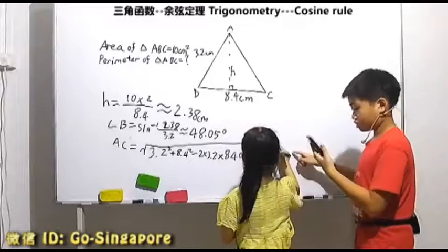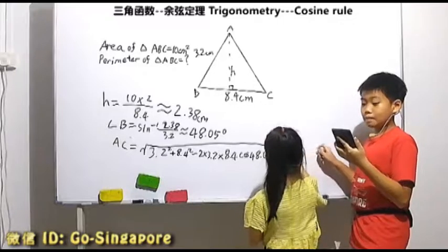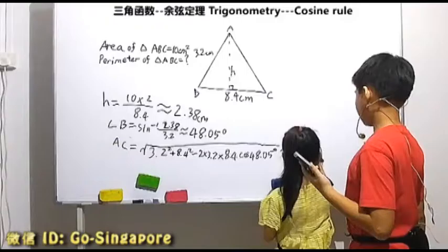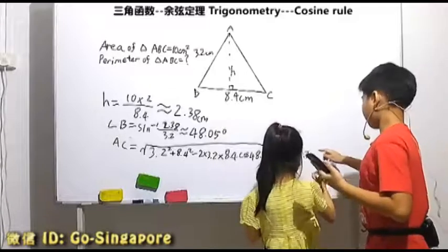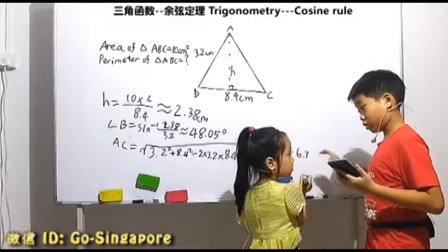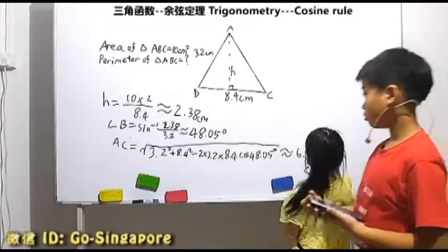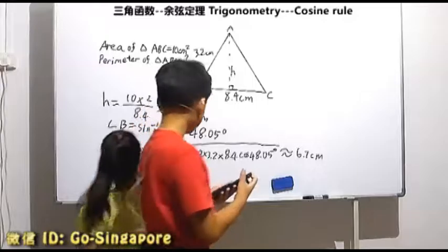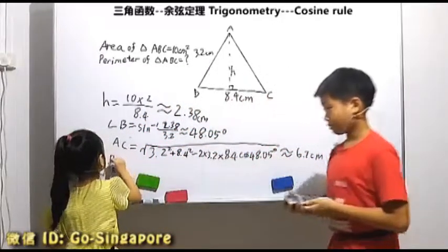This is 6.7. Because behind is zero, so you don't need to write it. Yes, centimeters. Perimeter. Yes.